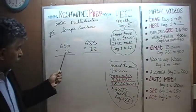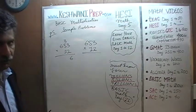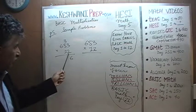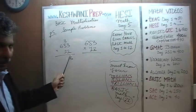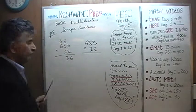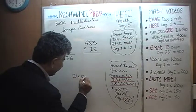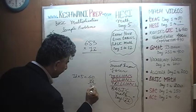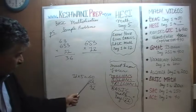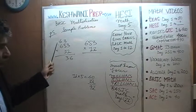Twelve threes are 36, carry 3. Twelve fives are 60, plus 3 is 63, carry 6. Twelve sixes: we know 12 fives are 60, so adding one more 12 gives 72; 72 plus 6 is 78. So the answer should be 7,836.